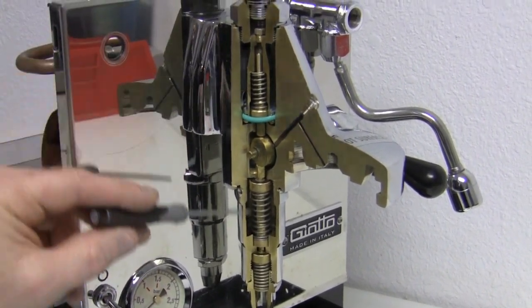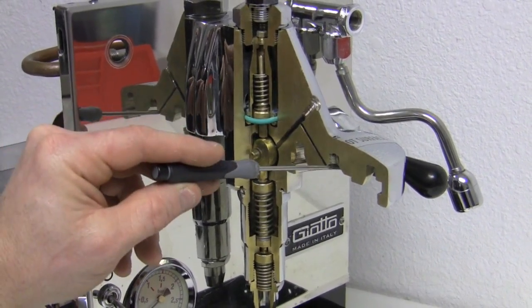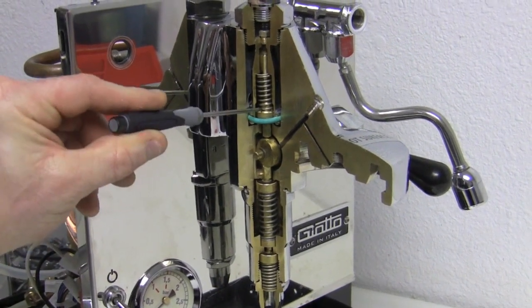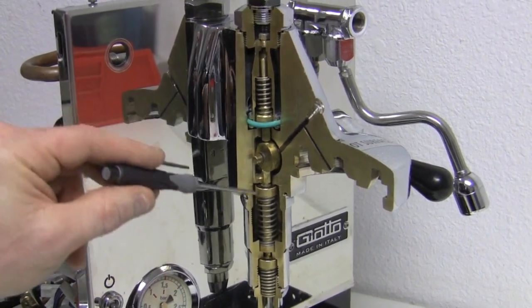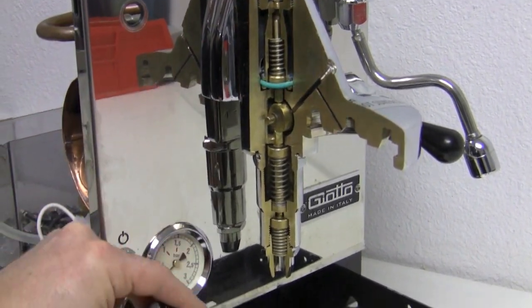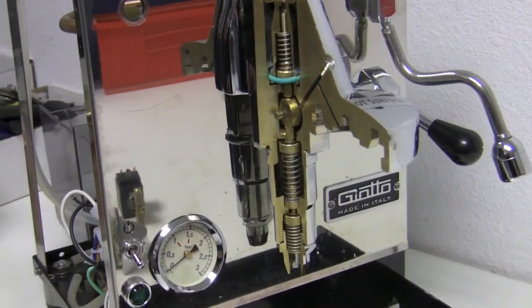So when water goes in, the exhaust valve closes, water can go into the coffee. Then when you're done brewing, the intake valve closes, that stops the water flow, and the exhaust valve opens, which allows the excess pressure to be released down into the drain box. So then you can immediately take out the portafilter.